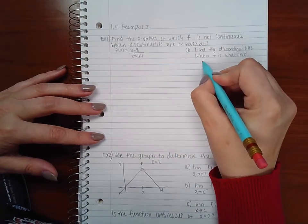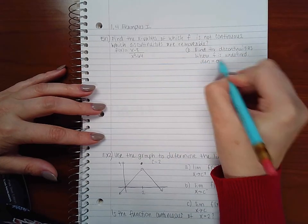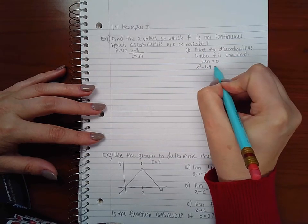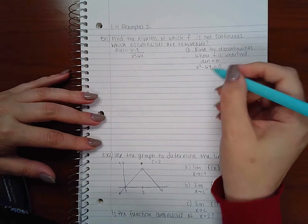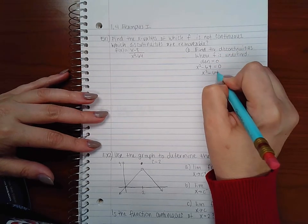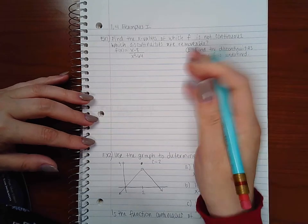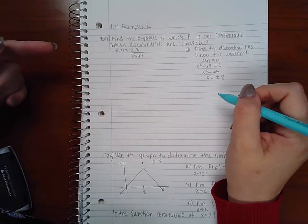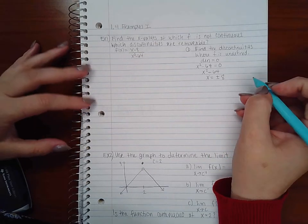How do we find that? We find out where f is undefined. Now we know for fractions, f is undefined when the denominator equals zero. So in our case where 6x squared equals zero, and if I solve that I get x equals plus or minus 8. So my discontinuities are x equals 8 and x equals negative 8.